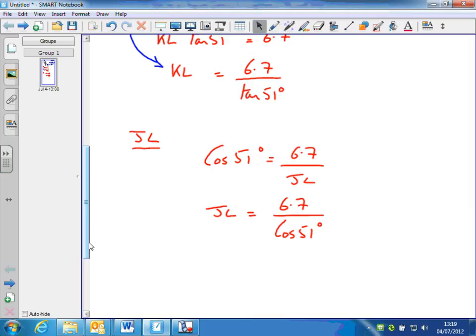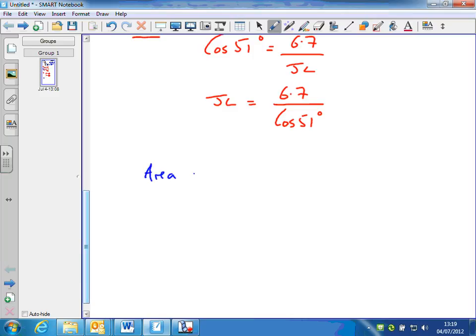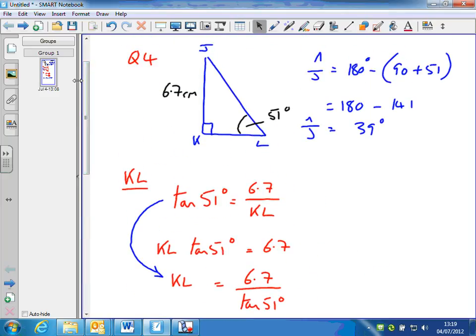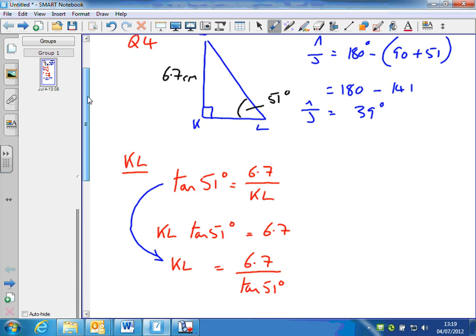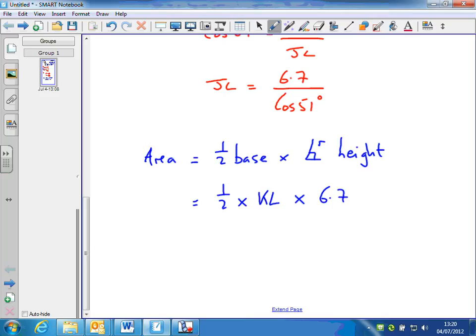Finally, area of a triangle is half base times perpendicular height. That's a common symbol for perpendicular. In our triangle, the perpendicular height is the vertical height, which is JK, and the base is KL. So it's half times KL times 6.7, and that will be in square centimeters because we're working in centimeters.